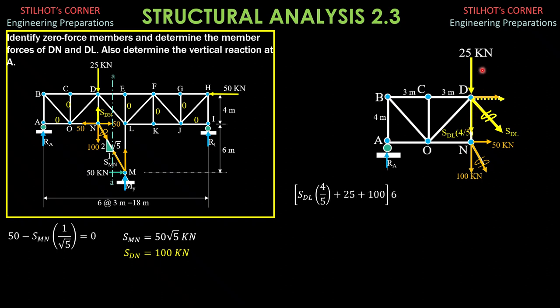Then we have SDL times 4 over 5 plus 25 plus 100. All these vertical forces will have moment arm of 6 meters. Summation moments about B equals 0. Clockwise positive. SDL times 4 over 5 plus 25 plus 100 times 6. All these three vertical forces. Then, equals 50 times 4. So we can now solve for SDL. And SDL is equal to negative 114.6 kN. So it is a compression member.